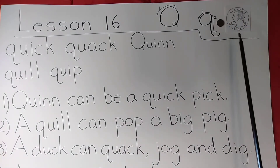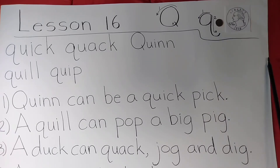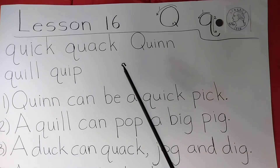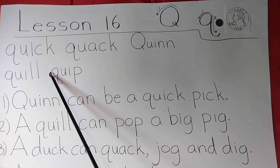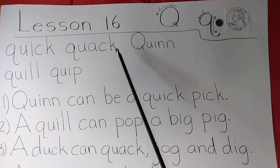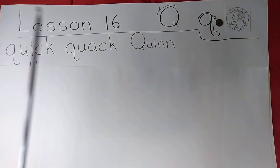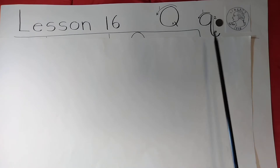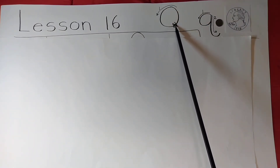Had to make it bigger so you could see it. So Lesson 16 — if you're not doing the printing practice, just skip, as I'm sure you've been doing, to the words. If you are doing the printing practice, you'll be doing capital Q — like you do an O, go around counterclockwise, put a little tail on it, and you've got a Q.